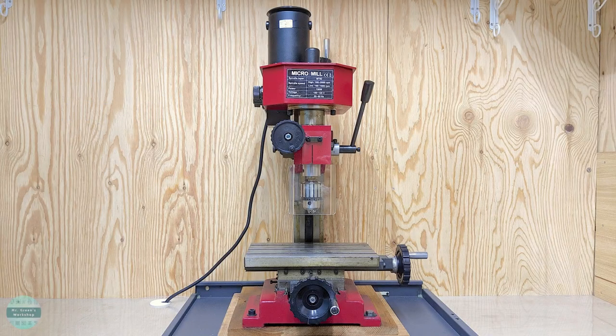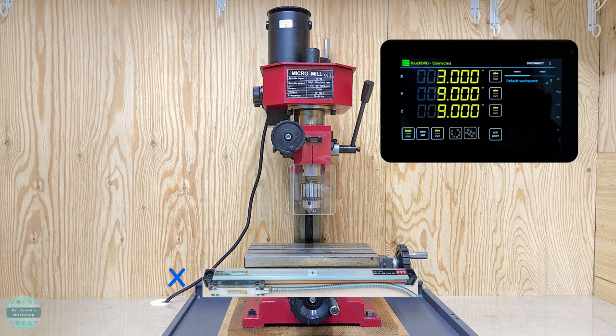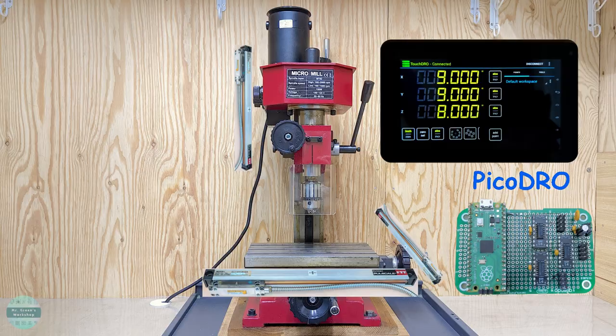This is my milling machine and I need a digital readout unit. I have these three linear scales. Let's make one using Raspberry Pi Pico.